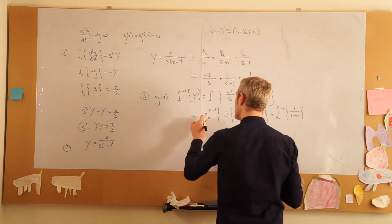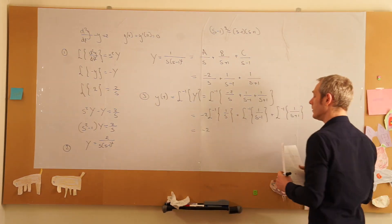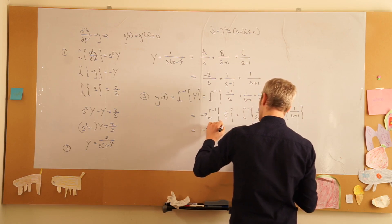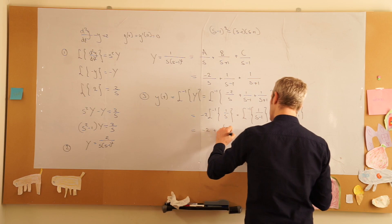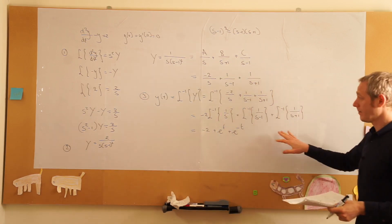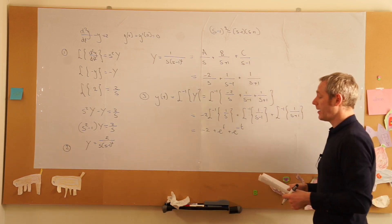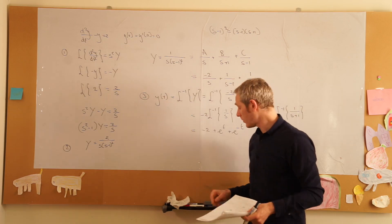So here we get minus 2 times 1, so minus 2. This one will yield e to the power of 1 times t plus e to the power of minus 1 times t. And we have our solution for y. So now we have solved this differential equation.